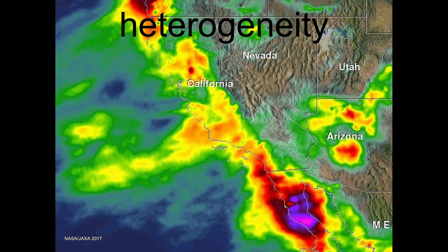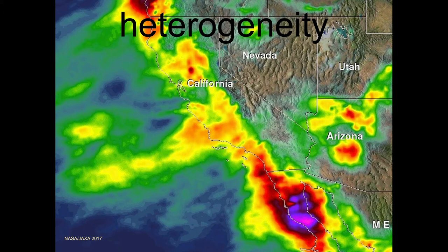Whether it's heat, rainfall, or whatever, there is a coastal fringe that is oftentimes more variable. We see that also with vegetation. From the water to the land in cross-section, we see representative different types of vegetation depending on where we are relative to water in the coastal zone.